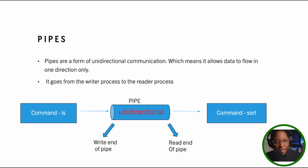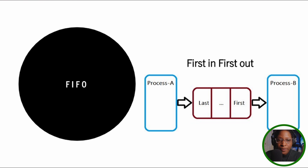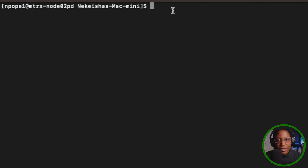So let's take a look at pipes. In the simplest form, pipes are a form of unidirectional communication, which means data flows in one direction only — from the writer process to the reader process. There are two types of pipes in Linux: anonymous pipes, which are your regular pipes, and named pipes, also known as FIFOs.